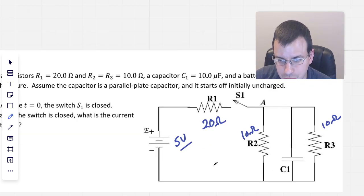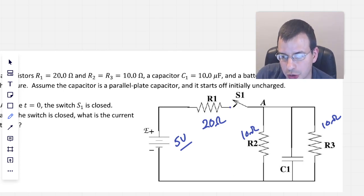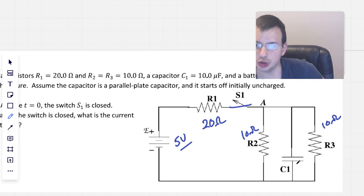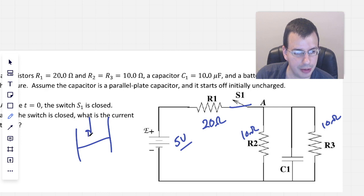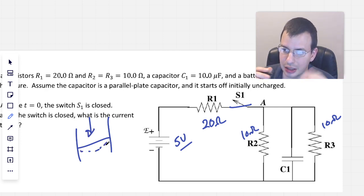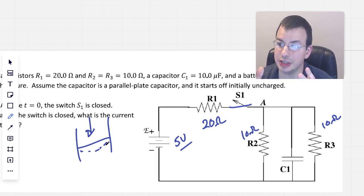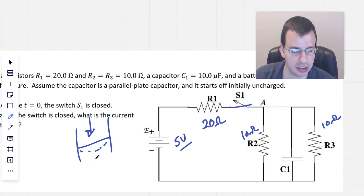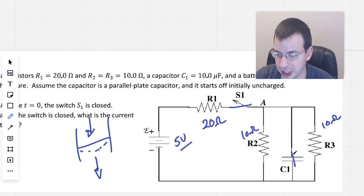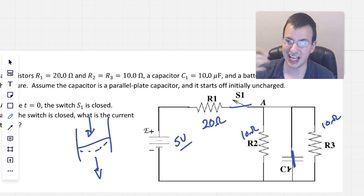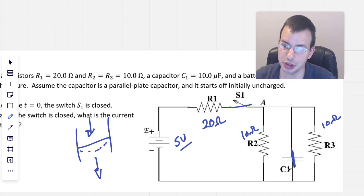At T equals 0, switch S1 closes. Current comes through and the capacitor is going to offer no initial resistance. If you think of it as a diaphragm in a pipe, water pushes this way, it stretches a little bit, but initially when unstretched it provides no resistance. Water pushes here, which pushes water there, which just goes on through with no resistance. So that capacitor right there is as if it's a short — just a straight wire.